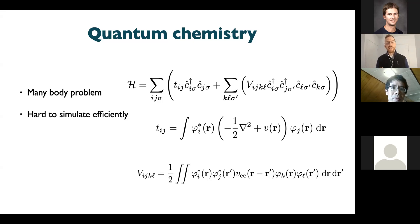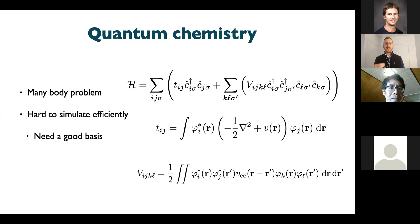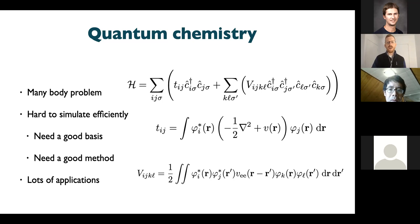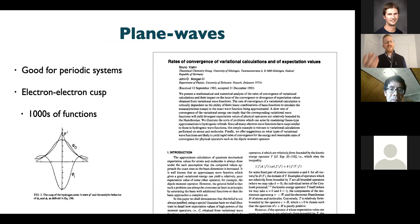Anything you can do to make this better is going to make modern life much different and allow you to build better technologies. To simulate it well, you need a good basis function — the equation is written in second quantization, and the indices i and j pertain to basis functions. In addition to a good basis, you need a good method to simulate the Hamiltonian. If we do our job here, we can do many applications based on this Hamiltonian, since we're basically describing all materials. If we didn't understand how to solve this equation we might not have been able to build the computer.